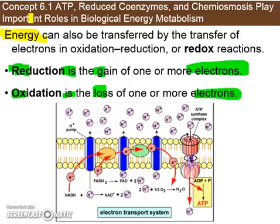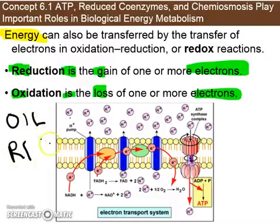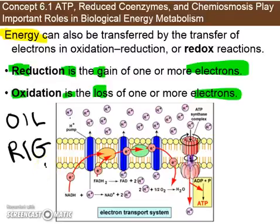Make that ATP that's going to allow our cells to do work. How do I remember which is which? This is a little mnemonic device: OIL RIG. Oxidation is losing. Reduction is gaining electrons.